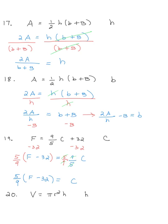For problem 20, we are solving for h: V equals pi r squared h. By the way, this is the formula for the volume of a right cylinder, where r is the radius of the circular base and h is the height. To solve for h, I divide both sides by pi and r squared — it completely cancels on the right. My answer is V divided by pi r squared equals h.